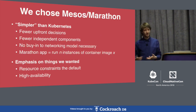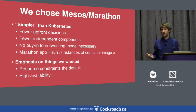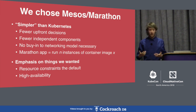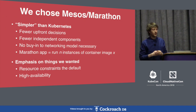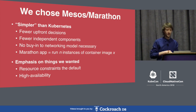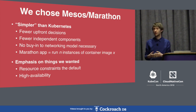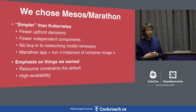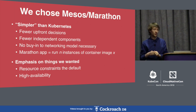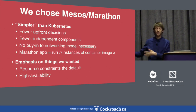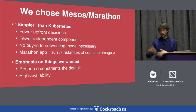At the time, we actually didn't choose Kubernetes — we chose Mesos and Marathon. The main reason was it seemed simpler: fewer upfront technology decisions, fewer independent components, less microservice-y design. You don't have to buy into a networking model for IP-per-pod or anything like that. Marathon provides a really simple abstraction for running apps — you just run a certain number of instances of an app. It had an emphasis on resource constraints, which was important since we wanted to make good use of our resources. It also had high availability features, which we thought would be great for running containers in not-so-reliable hosting environments.